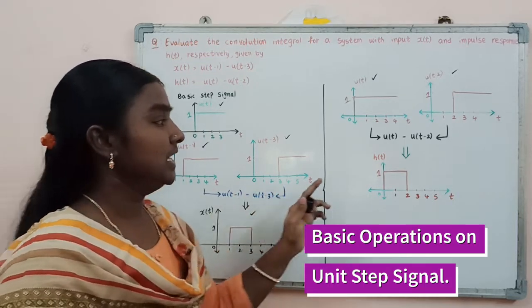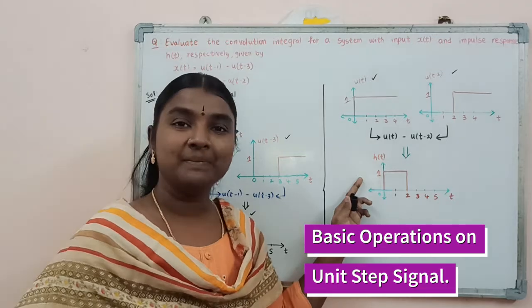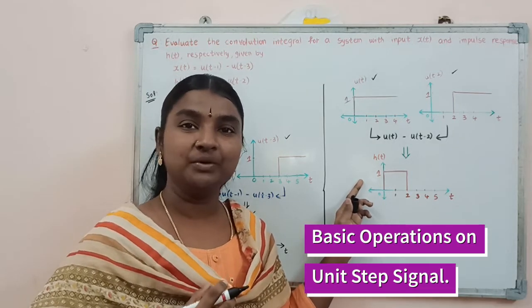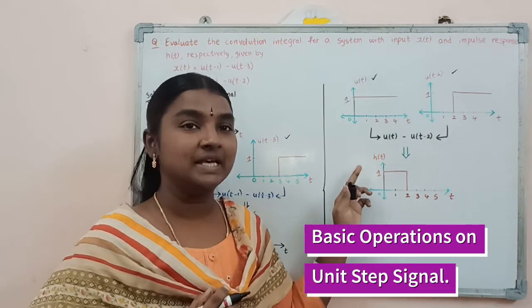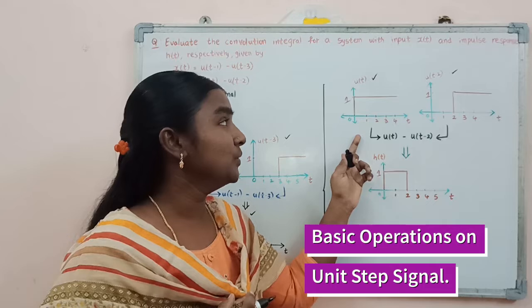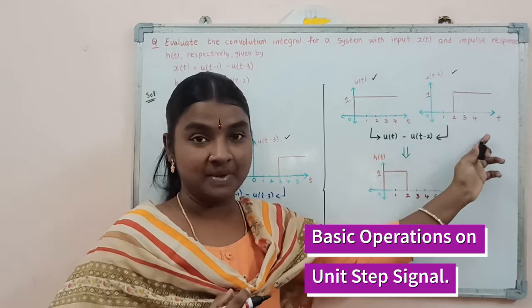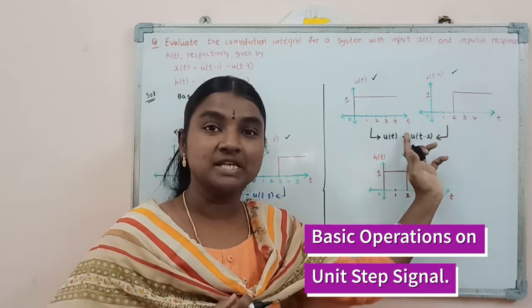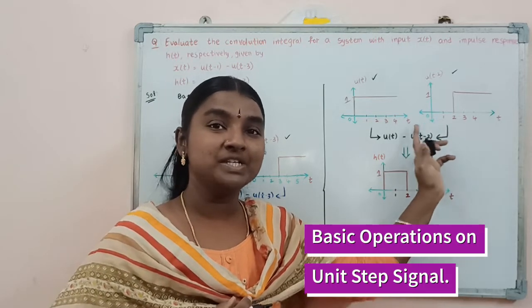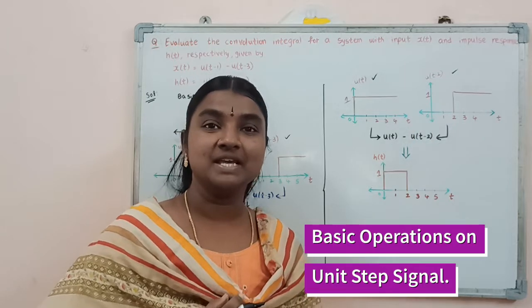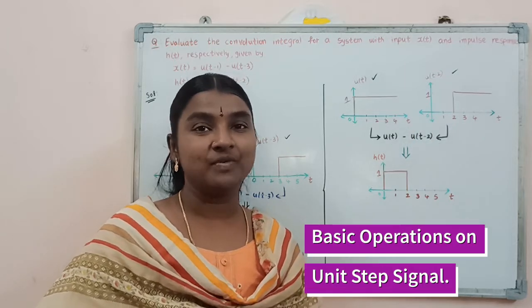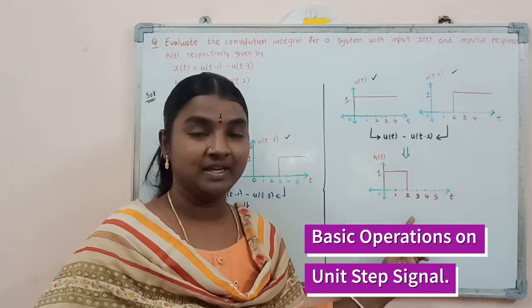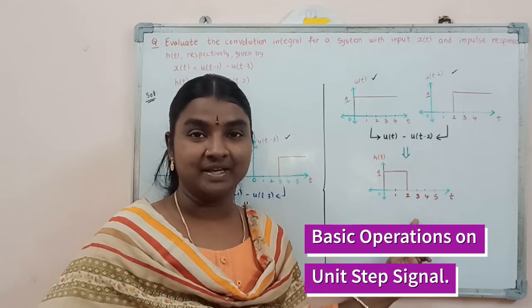Next, we need to find the impulse response signal h(t). For that, we consider step signals u(t) and u(t-2). By doing a subtraction operation between these two signals, we obtain the impulse response signal h(t).